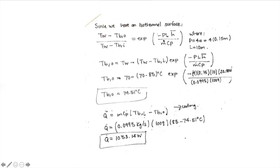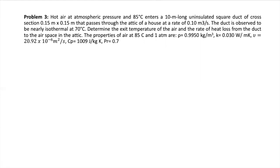With the rest of the values ready, after putting numbers into the equation, we get that the bulk outlet temperature is around 74°C. Knowing this bulk temperature, we can use a general energy balance to calculate the heat transfer rate.